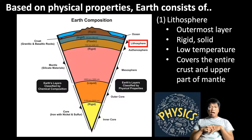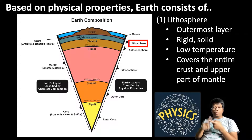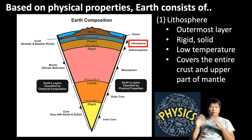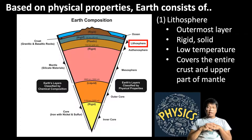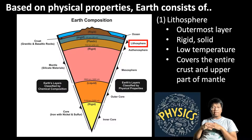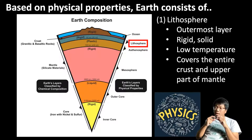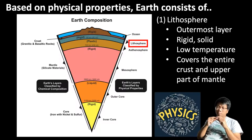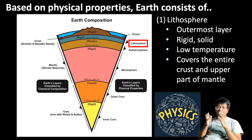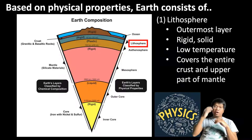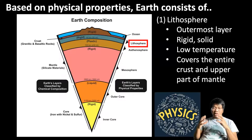Litho actually means rocks. The lithosphere is the outermost part of the Earth and it is rigid and solid. It does have lower temperature than the rest of the Earth's layers. An important concept is that the lithosphere covers the entire crust, and it turns out the uppermost part of the mantle is also solid. Since both the uppermost part of the mantle and the crust are solid, they all belong to the lithosphere. Therefore, the Moho boundary would be located inside the lithosphere.